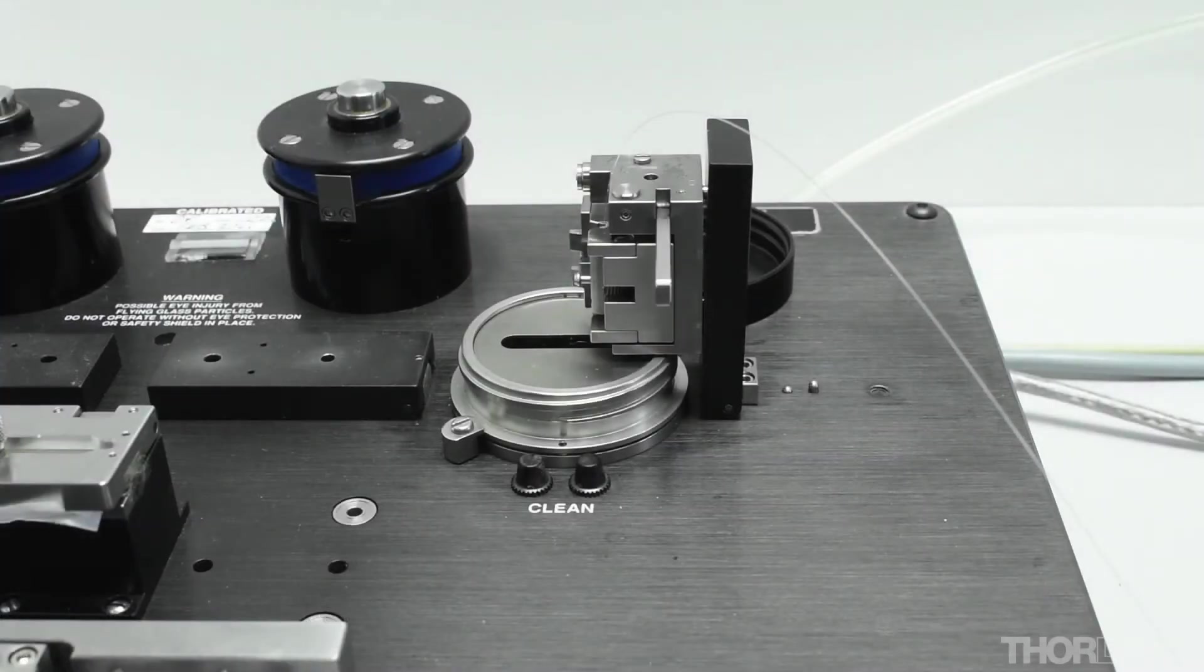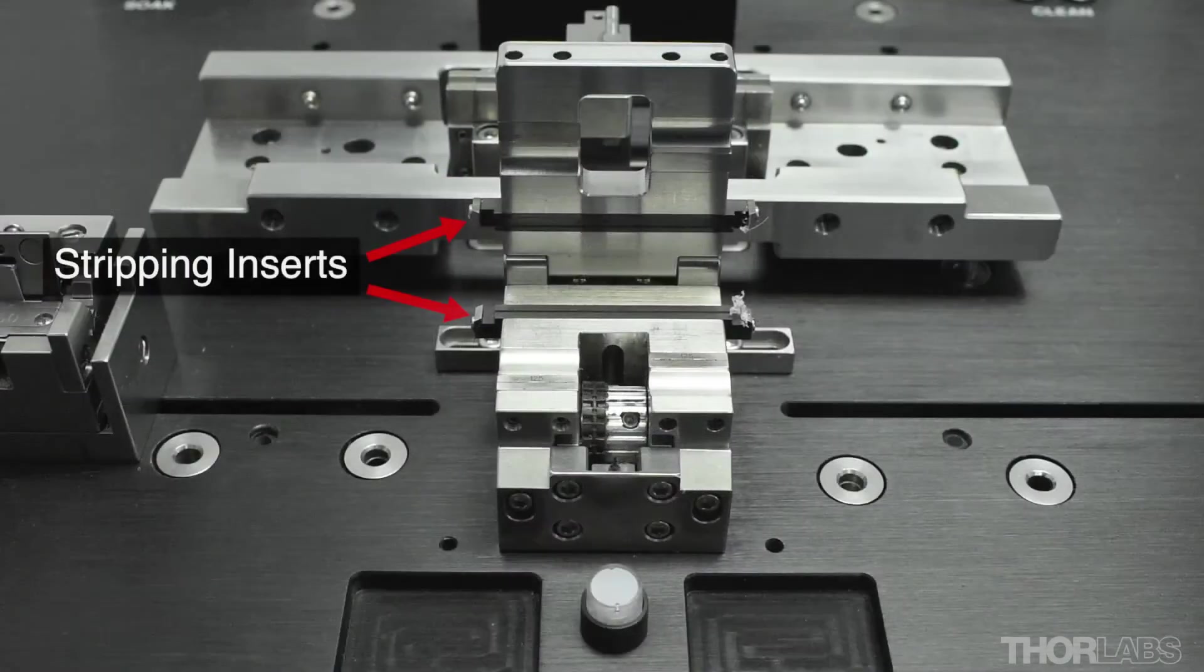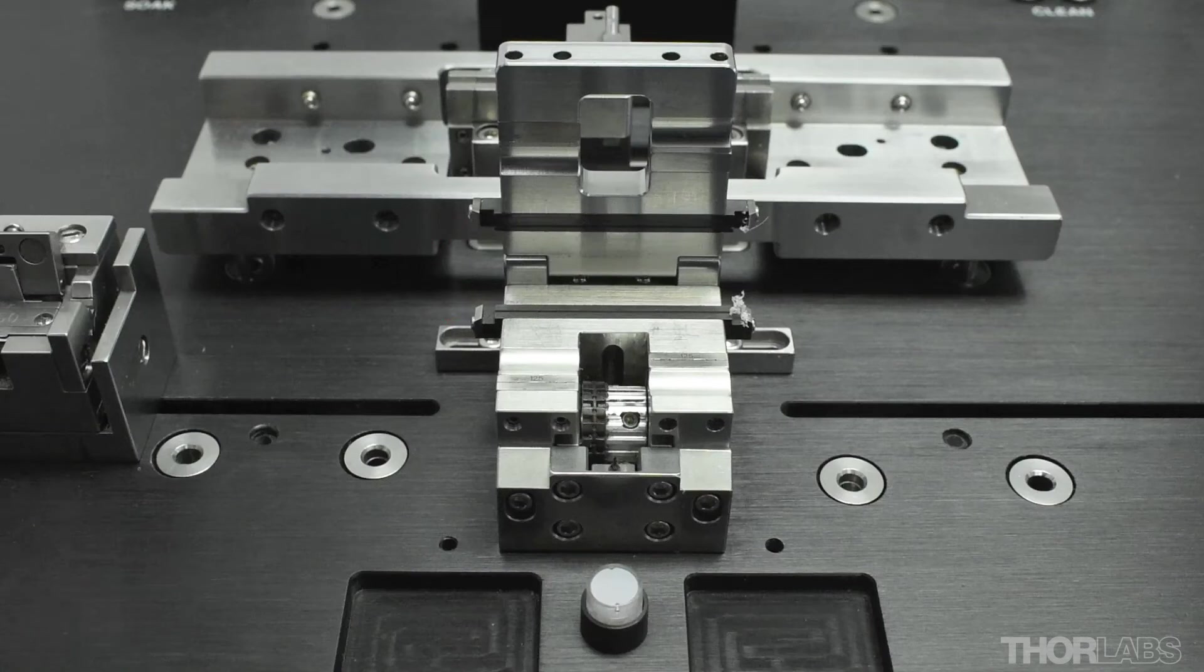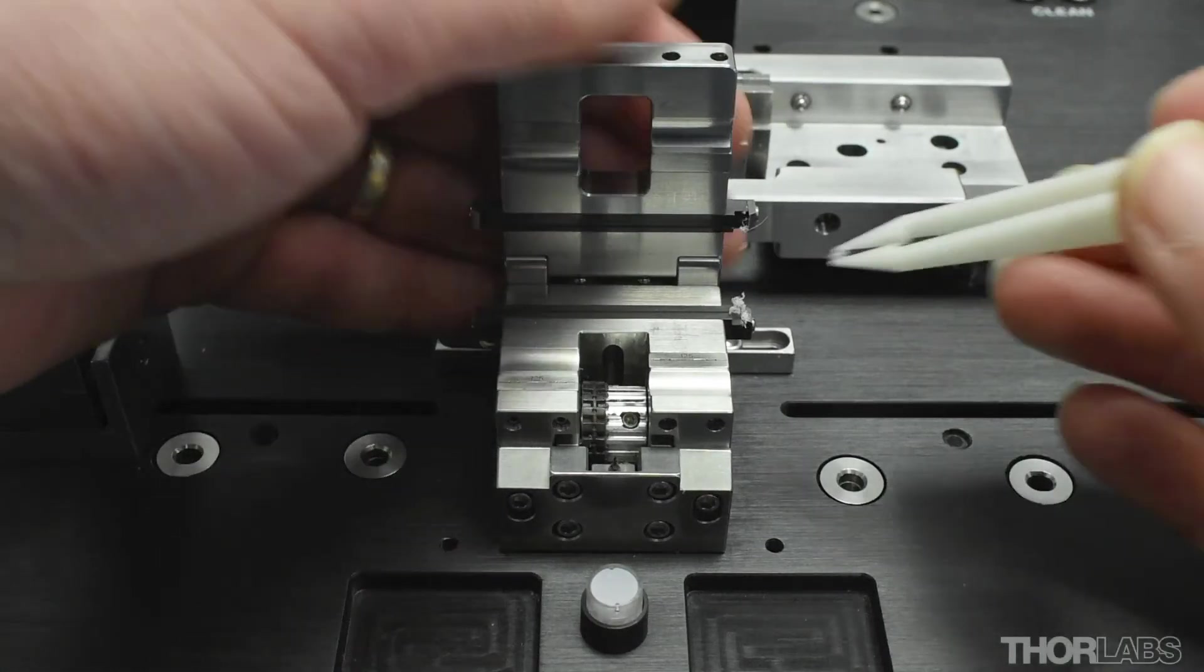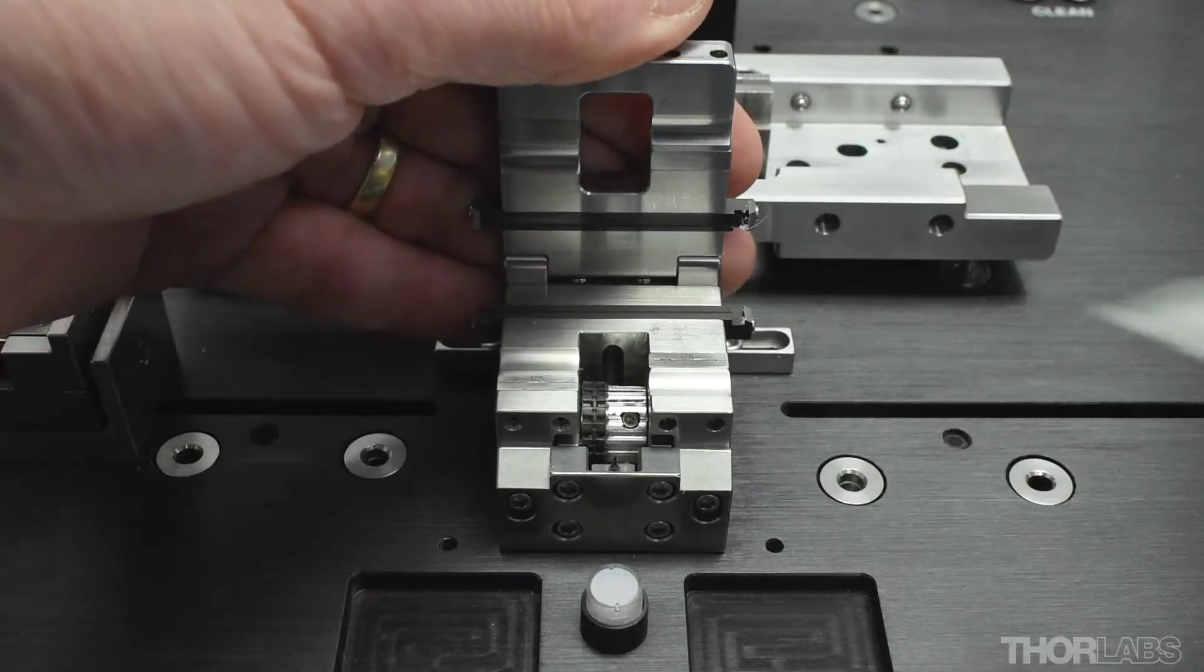Whilst the stripped fibre is being cleaned, the coating debris at the stripping inserts can be removed and the stripping station cleaned down. If there is a big ball of coating, this can be removed using soft tipped tweezers.